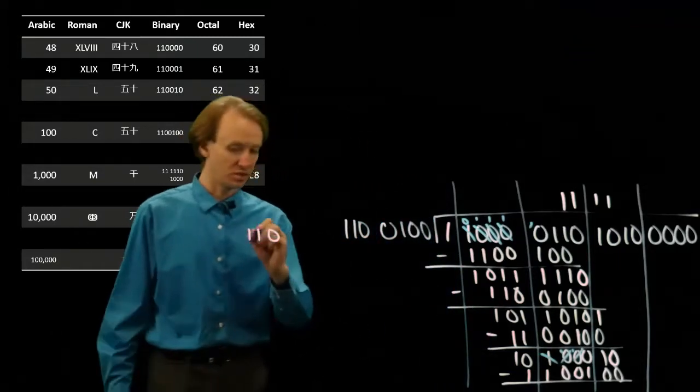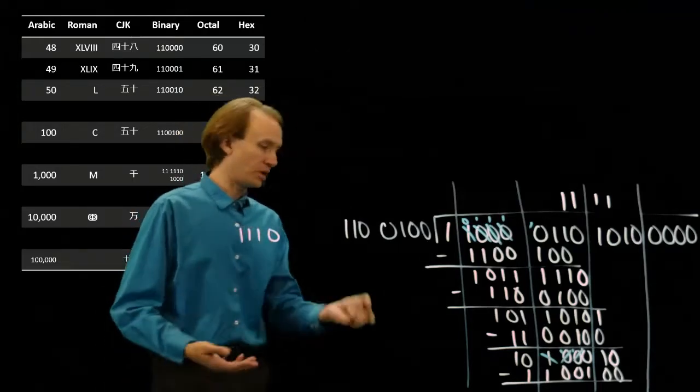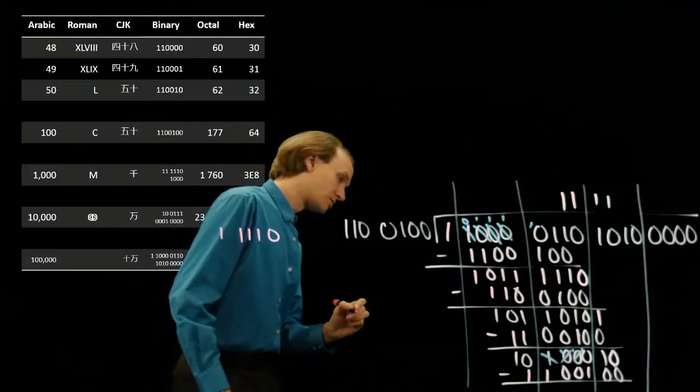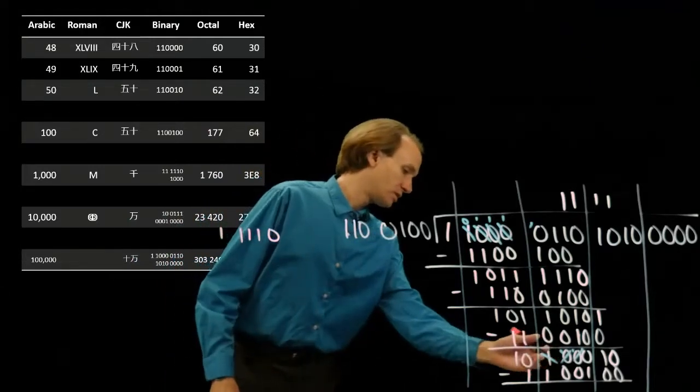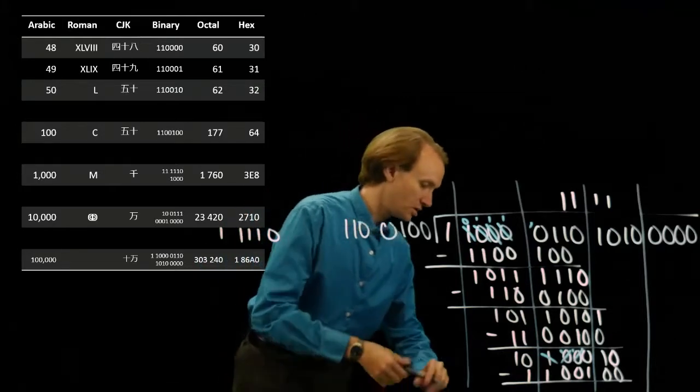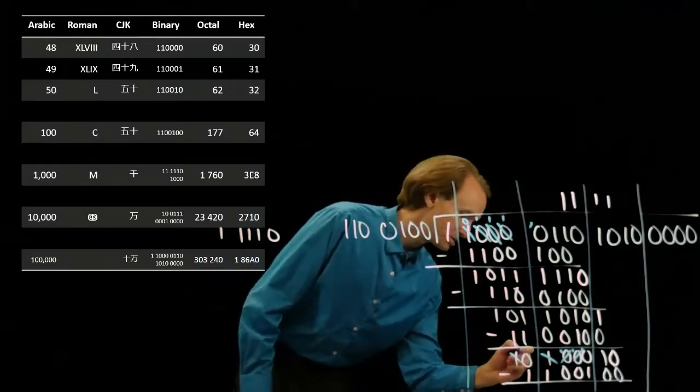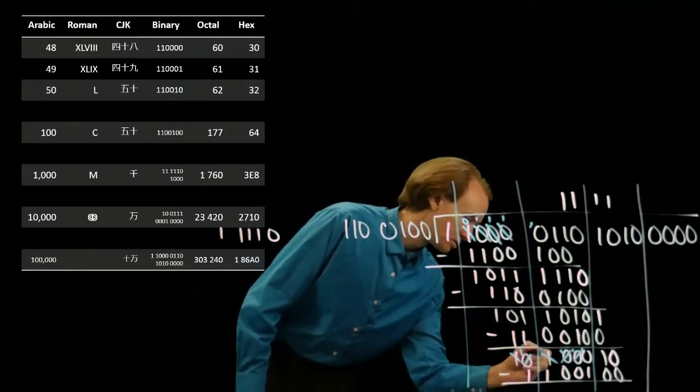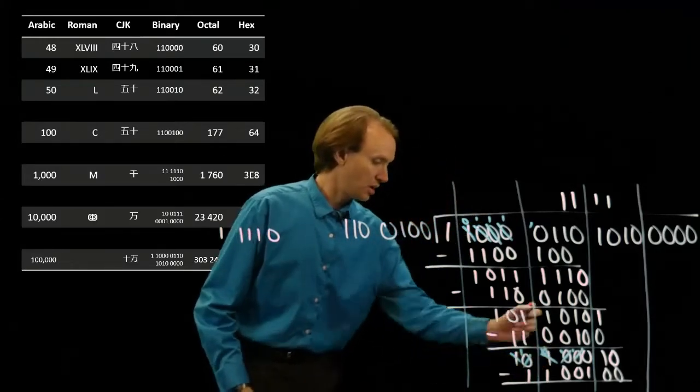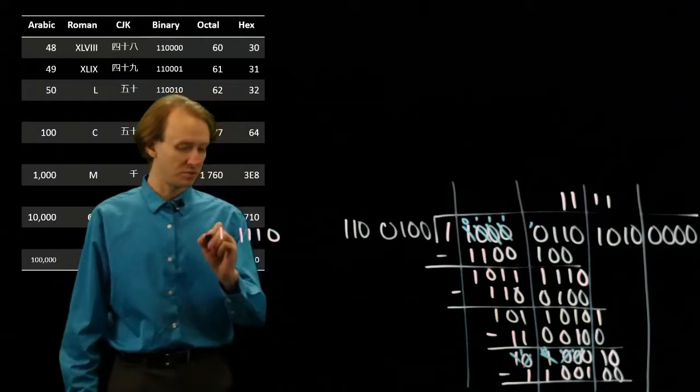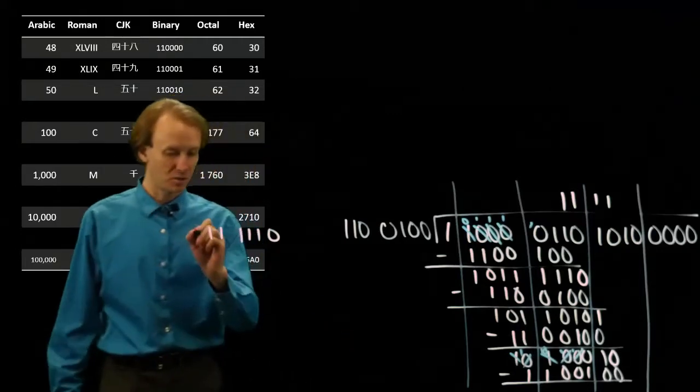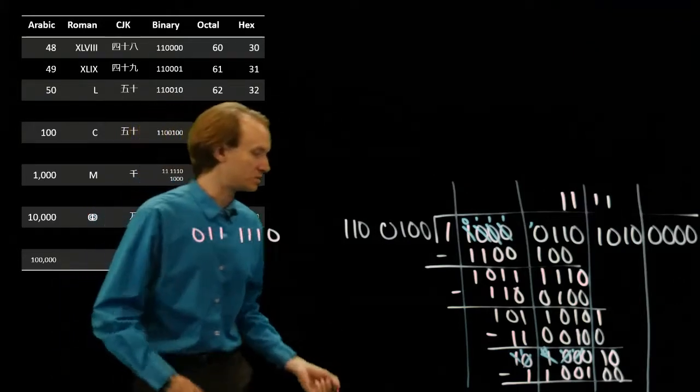So 10 minus 1 will give me a 1. 1 minus 0 gives me 1. 1 minus 0 is 1. And then 0 minus 1 means I'll need to borrow something. And I'll go all the way over to the last place. So I will now have a 10 there. And I'll have 10 minus 1 gives me 1. And 1 minus 1 gives me 0. And 0 minus 0 is also 0.